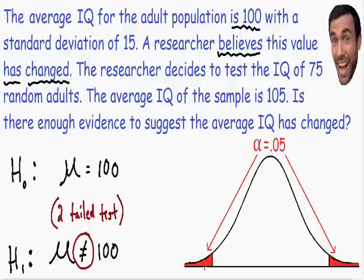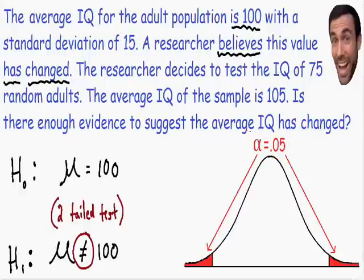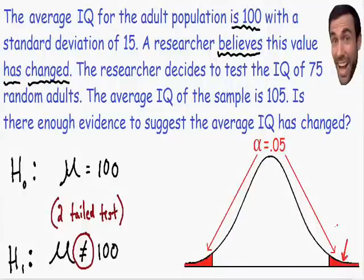Here I drew the normal curve. The level of significance is the area in both tails — remember, this is a two-tailed test, so we use both tails. I chose a level of significance of 0.05 because it is the most common level used, and it was not given in this example. The two tails are symmetrical, so if both combined have an area of 0.05, each tail has an area of 0.025.